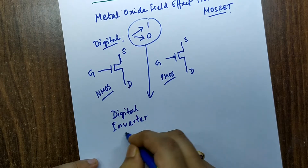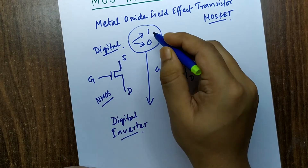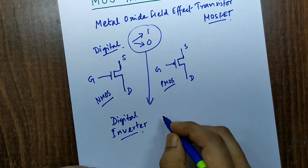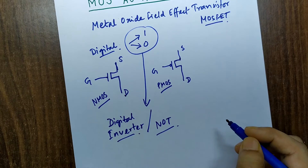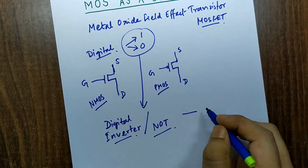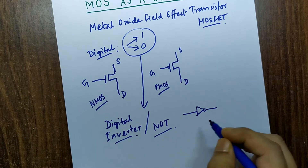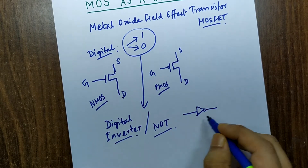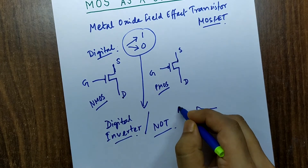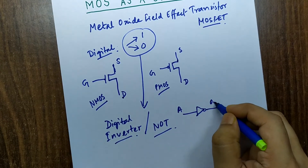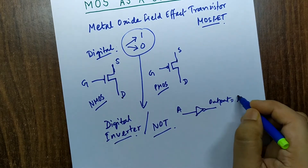The digital inverter gives us this same operation, and we also call it a NOT gate. The NOT gate symbol has only one input and one output. If the input is A, then the output is A-bar, because there is a bubble on the output.